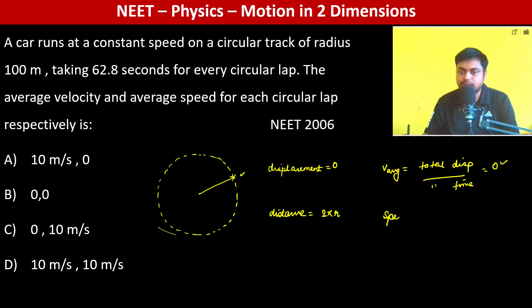Therefore, average speed equals total distance by total time, which is 2πr divided by t. So 2 × 3.14 × 100 meters divided by 62.8 seconds equals 10 meters per second.